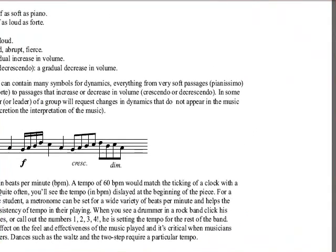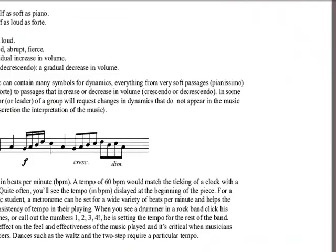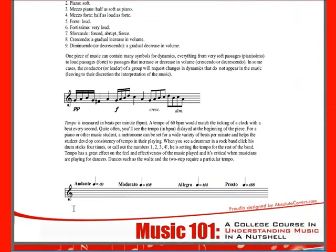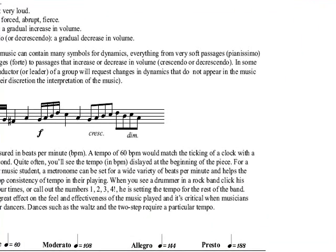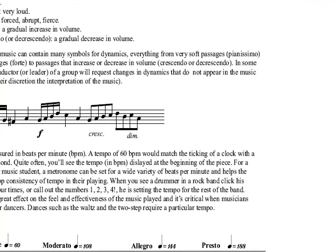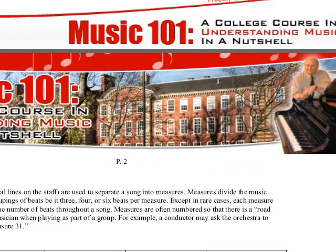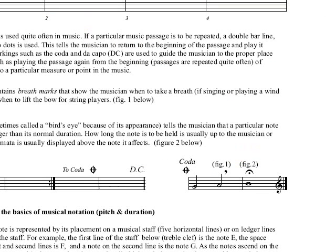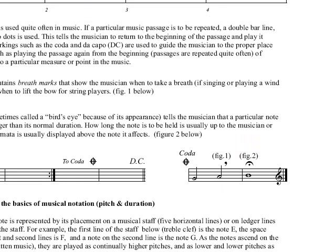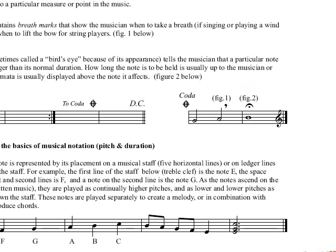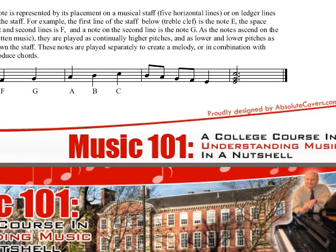And then a tempo marking such as andante, moderato, allegro, presto, and so on. So this is page two of lesson one — it talks about repeat signs, and codas, and DC, DS, and so on.